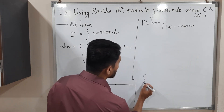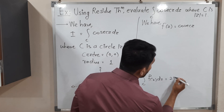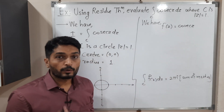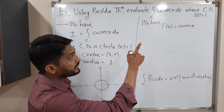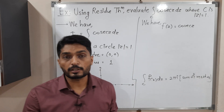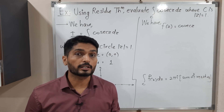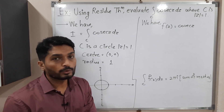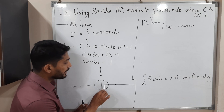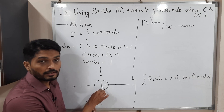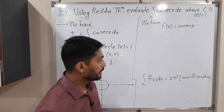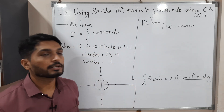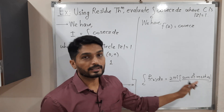Cauchy's residue theorem states that the integration over C of f(z) dz equals 2πi times the sum of residues. According to this theorem, we first find the singular points of the given function — the points where the denominator is zero or the function is not analytic. We check whether those points lie outside or inside the circle. If a point lies outside, we need not find its residue. If a point lies inside the circle, we must find the residue at that point. We then take the sum of all such residues, multiply by 2πi, and that gives the value of the integration.